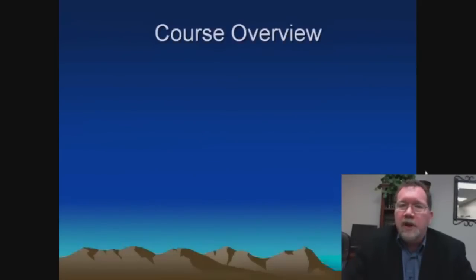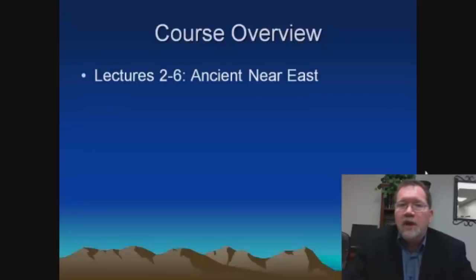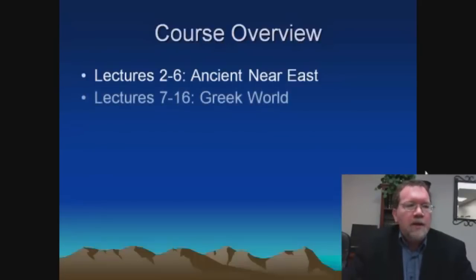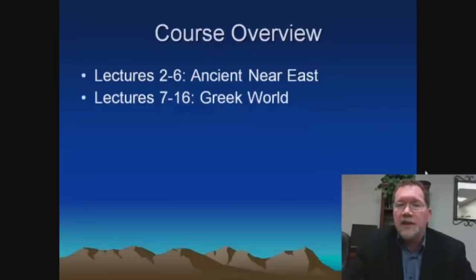Let me give a brief overview of what we'll be covering in this course. Beginning in lecture two, we'll take five lectures to talk about the ancient Near East — the region we refer to as the Middle East today, where the Hebrews are located geographically. We'll also look at several other civilizations from this region, such as the Egyptians. The next ten lectures, lectures 7 to 16, will deal with the world of the Greeks. We'll begin in the Aegean Sea with some of the earliest civilizations — the Minoans and Mycenaeans — then move on into Greek civilization proper, culminating in the Hellenistic Age, in which the central character is Alexander the Great.